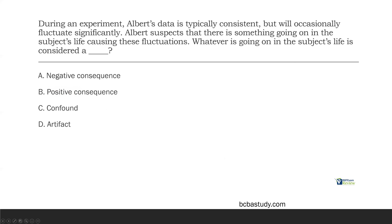During an experiment, Albert's data is typically consistent but will occasionally fluctuate significantly. Albert suspects there is something going on in the subject's life causing those fluctuations. Whatever is going on in the subject's life is considered a what? Albert is conducting an experiment — typically his data is consistent, maybe he has good experimental control, but occasionally he'll get these outliers. Albert thinks it's because something else is going on in the subject's life — another variable outside the experiment impacting the subject.